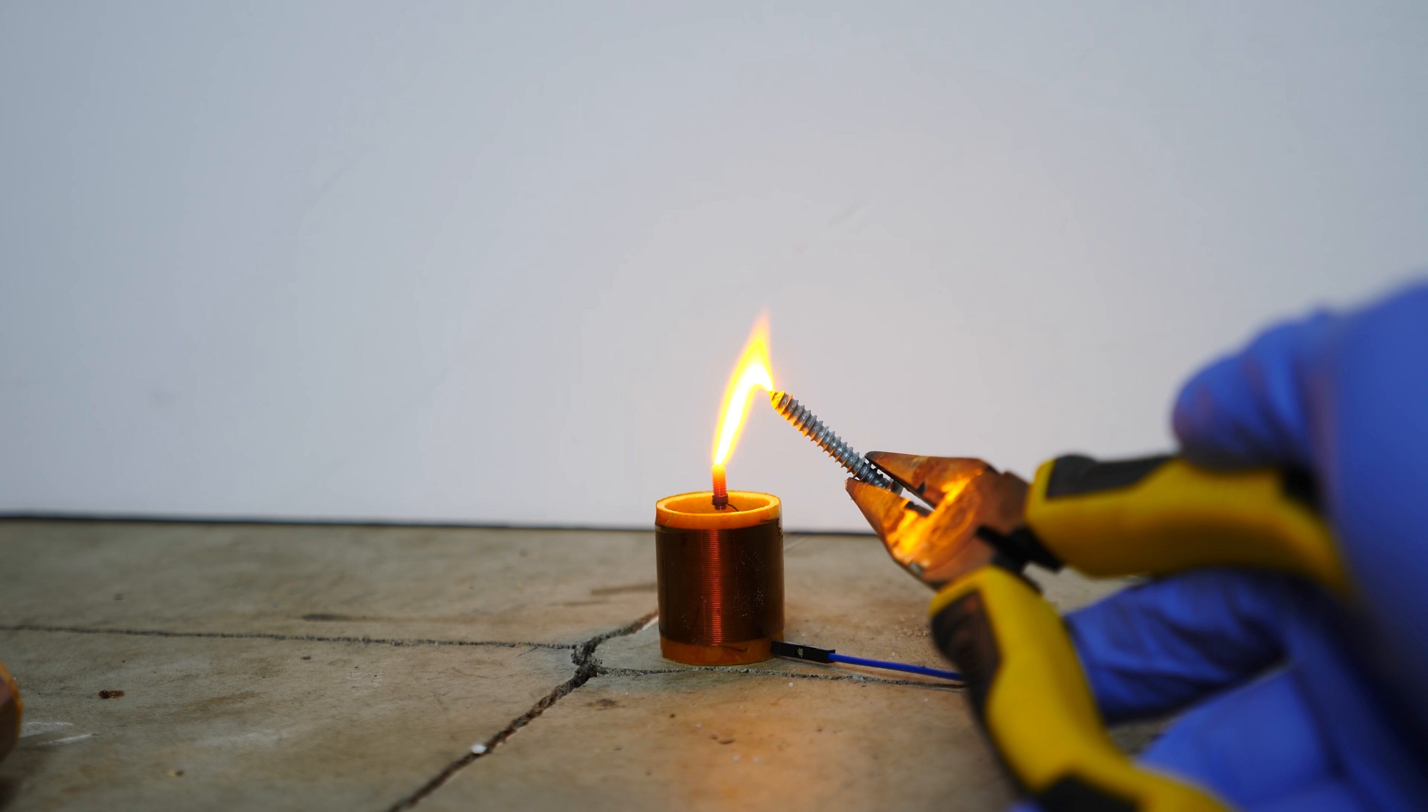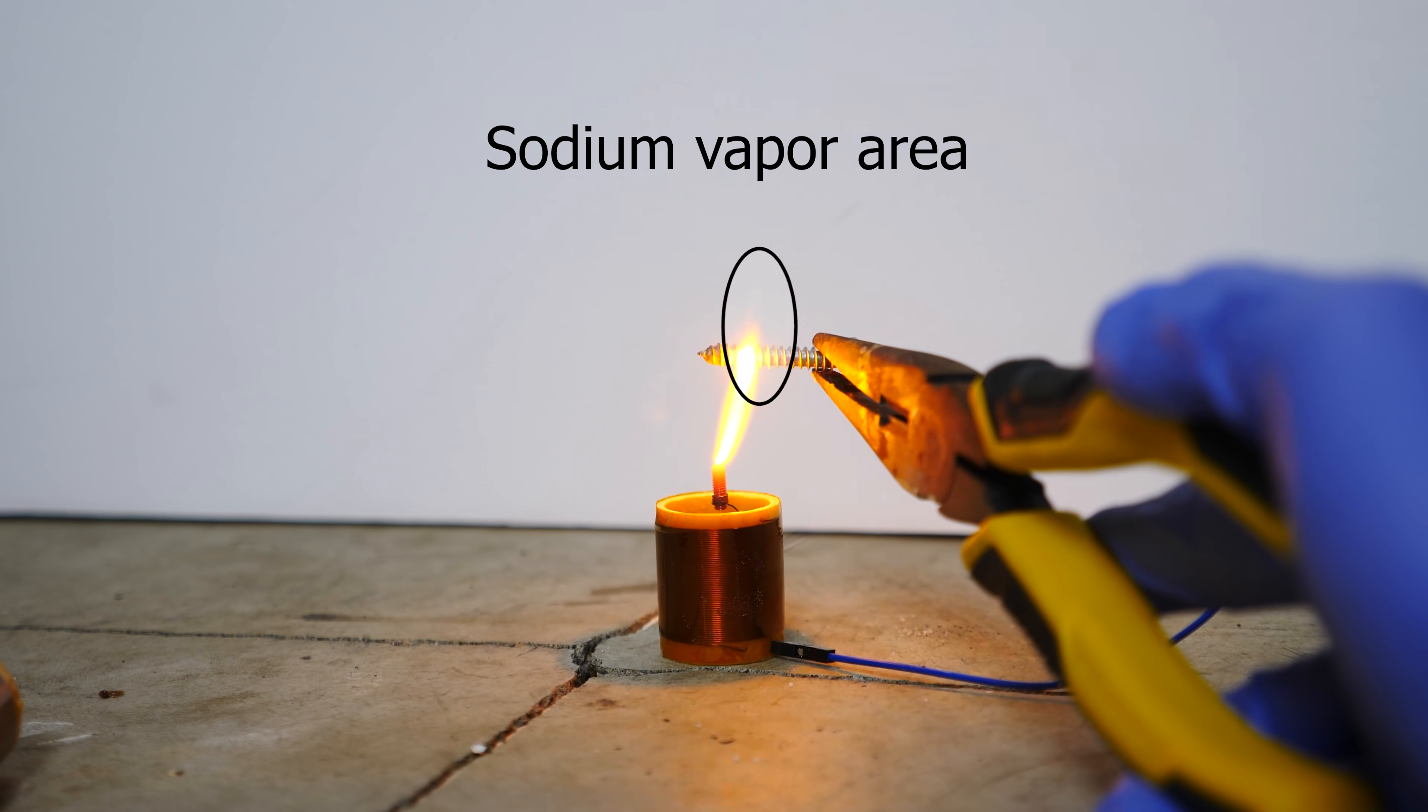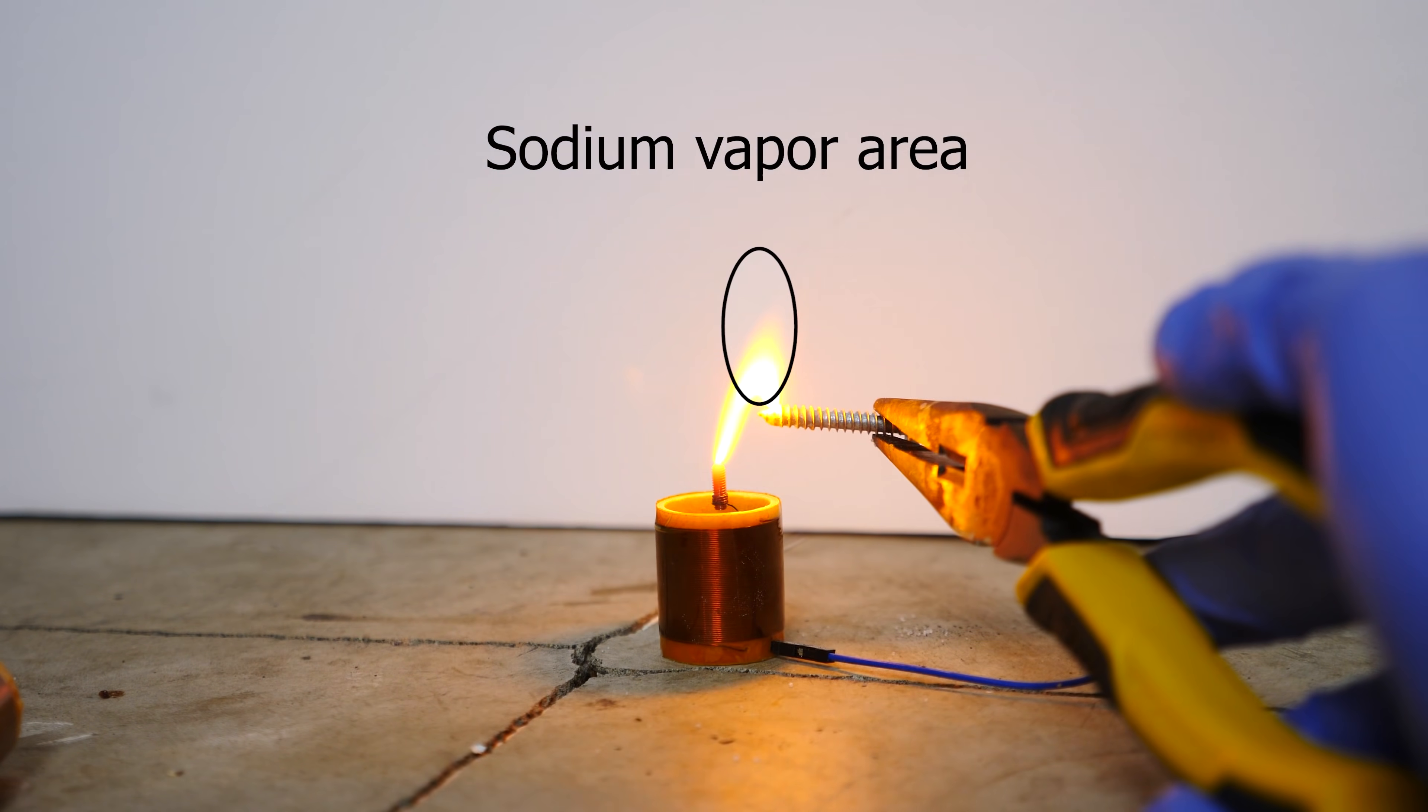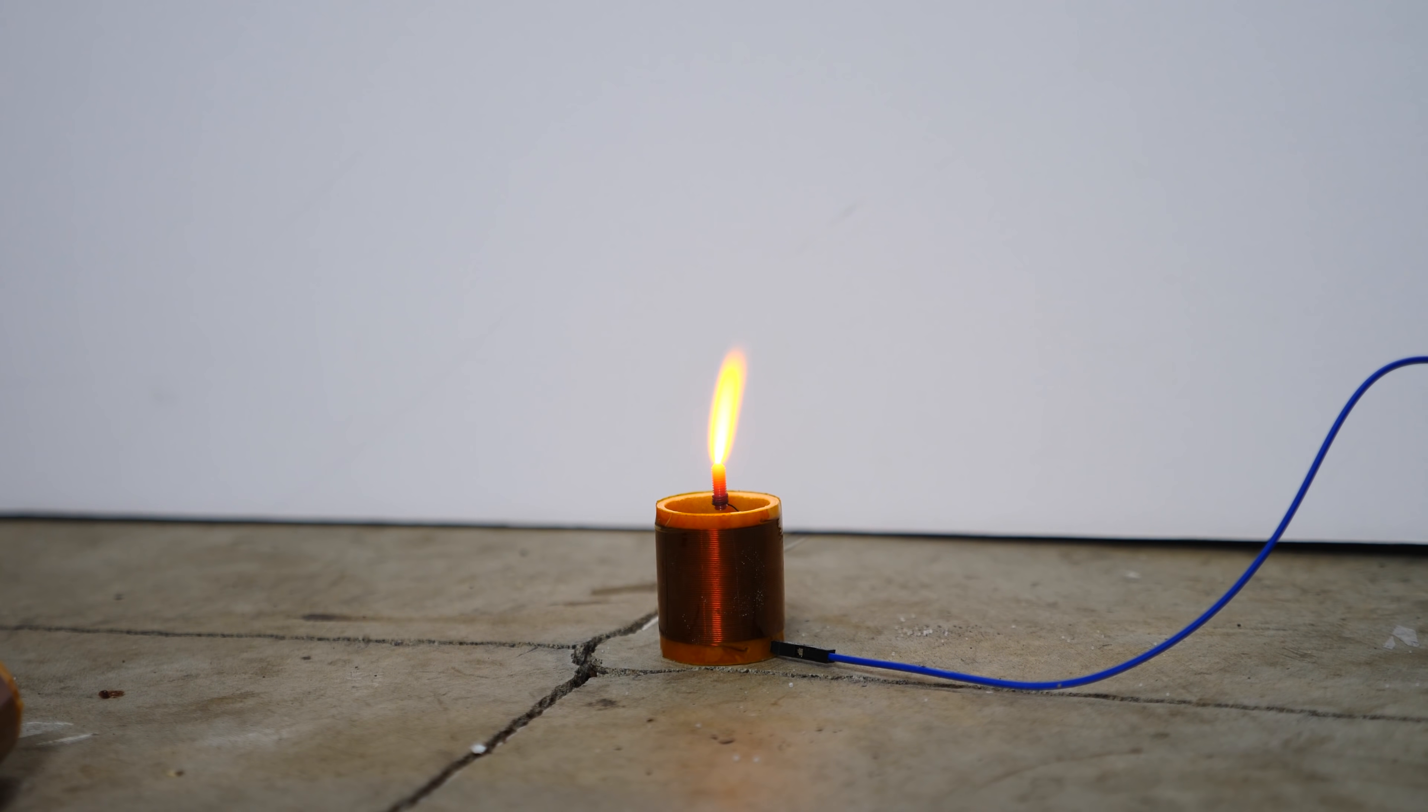And what it will do is it will ionize that sodium hydroxide, but when those ionized atoms come back together with their electrons they emit light and that's the bright orange light you see. But once they come back together now we have a bunch of sodium atoms that can absorb light from the sodium vapor lamp.